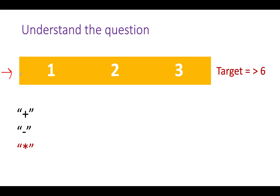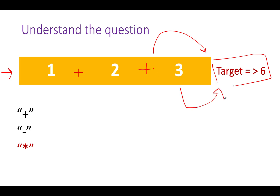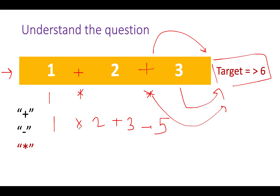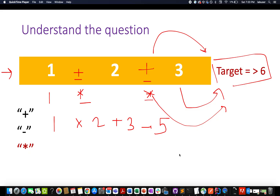We are given an input string and a target value. We are allowed to put positive, negative, and multiplication signs any number of times at intermediary positions in the input string. We need to find those expressions that evaluate to the target value. For example, placing plus signs gives 1+2+3=6, and placing multiplication signs gives 1×2×3=6. There is a small trick while generating all possibilities.